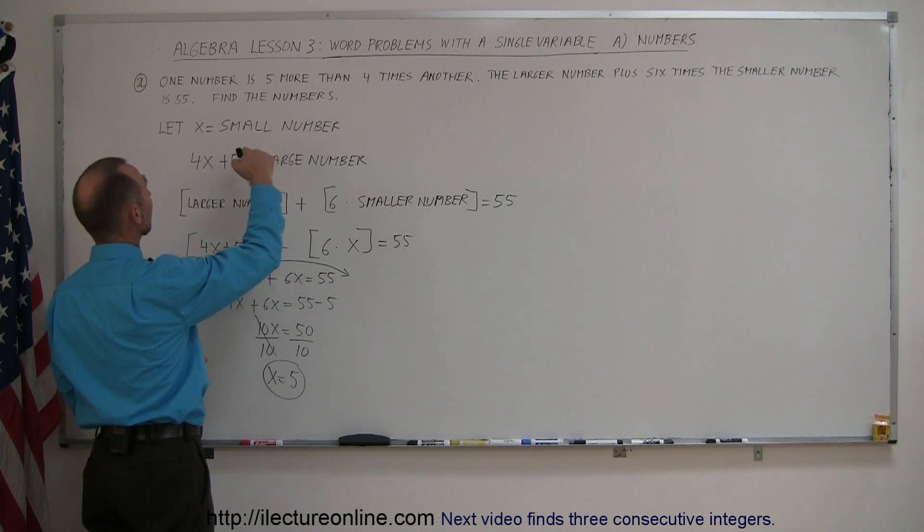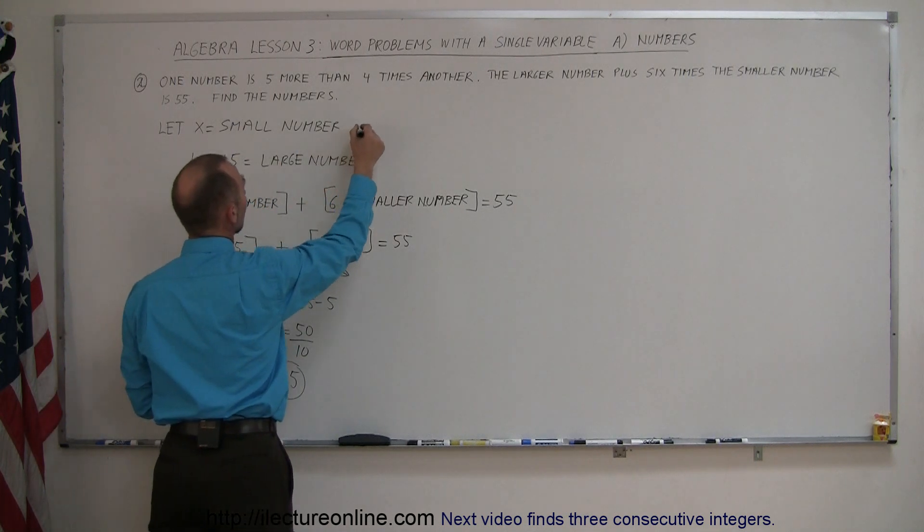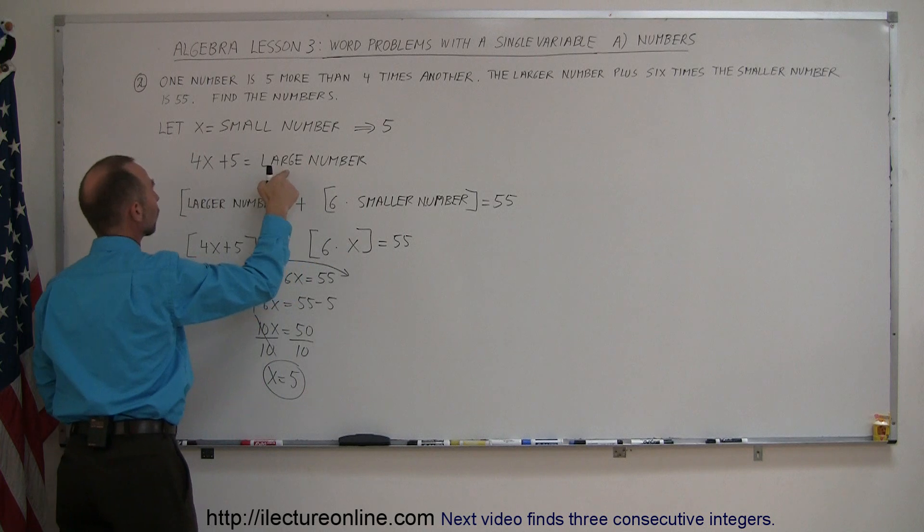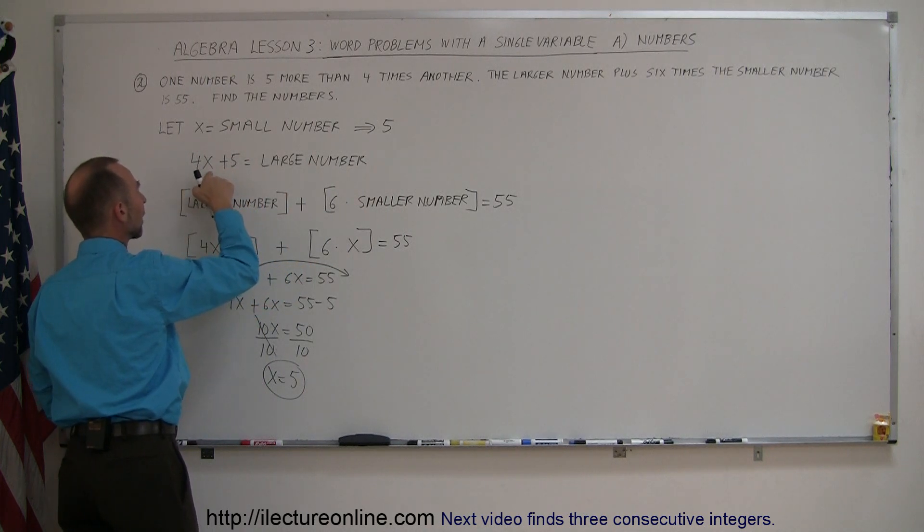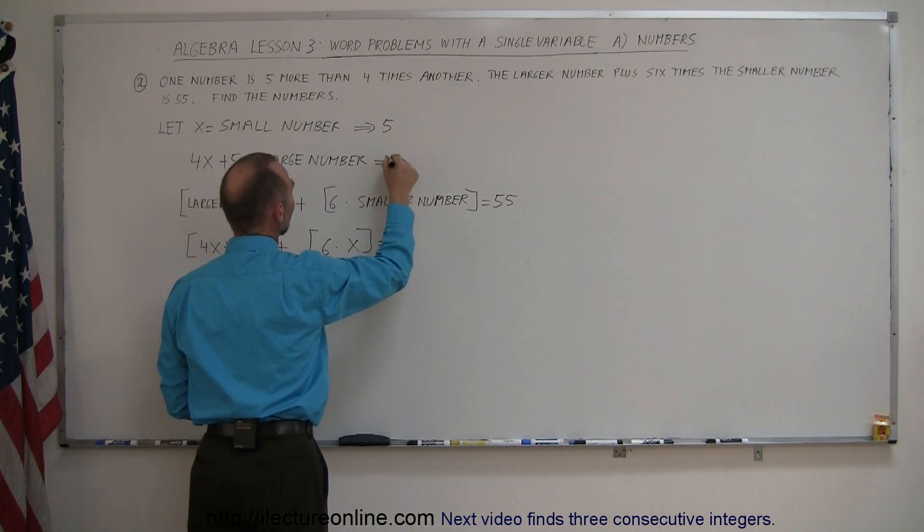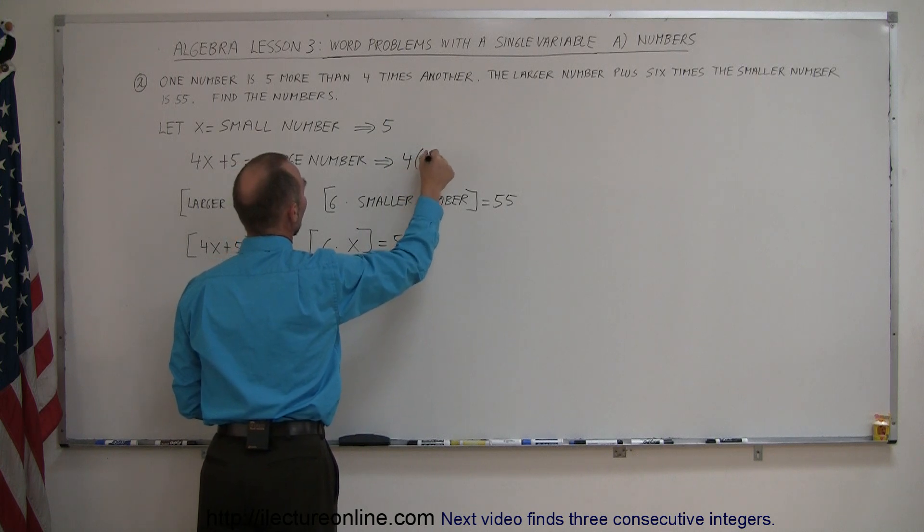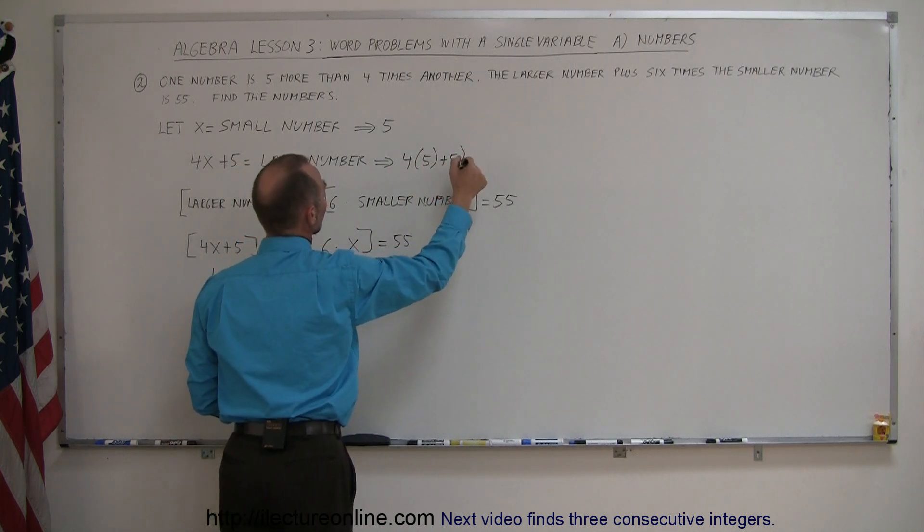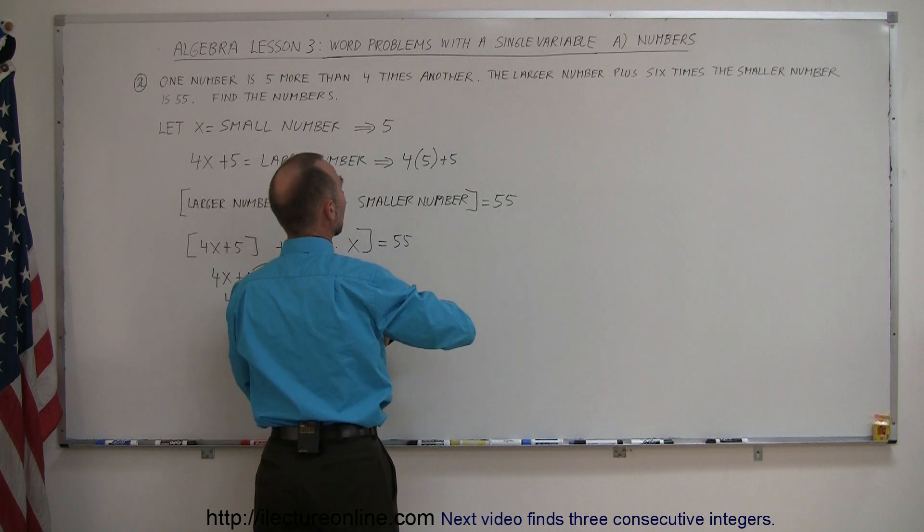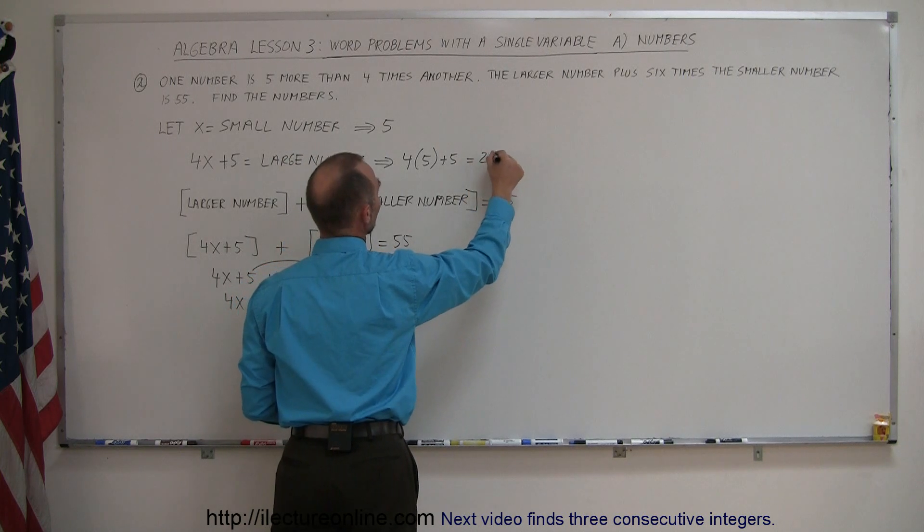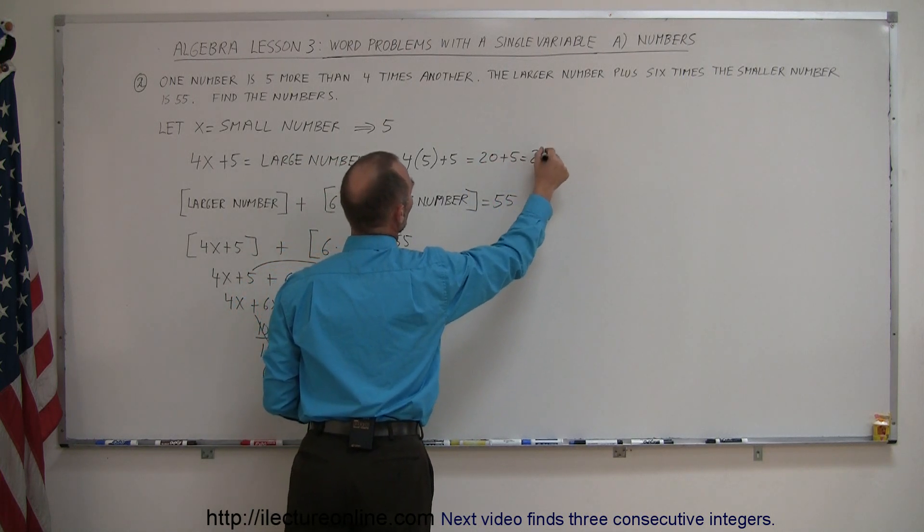So, going back up here, since x equals the small number, that's then equal to 5. And the larger number is four times x plus 5, so we can say that's equal to 4 times 5 plus 5. We don't need parentheses around that one, and so that's equal to 20 plus 5, which is 25.